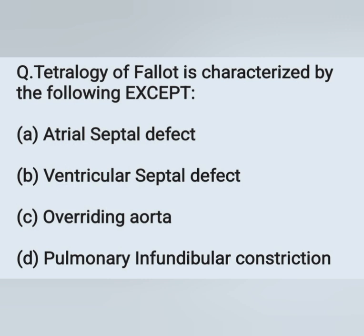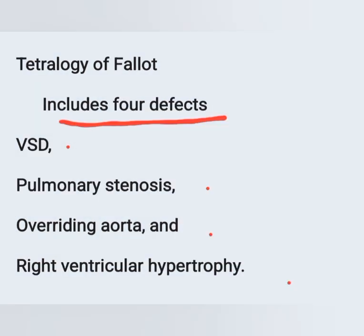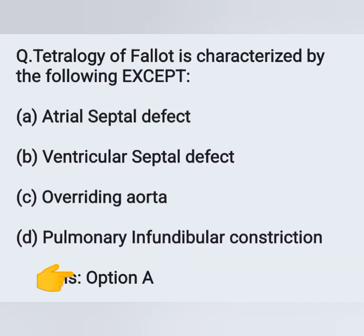Tetralogy of Fallot is characterized by the following, except: Option A: atrial septal defect. Option B: ventricular septal defect. Option C: overriding of aorta. Option D: pulmonary infundibular constriction. Tetralogy of Fallot includes four defects: ventricular septal defect, pulmonary stenosis, overriding of aorta, and right ventricular hypertrophy. Pulmonary infundibular constriction is pulmonary stenosis. So the correct answer is Option A, atrial septal defect, as the remaining options are all features of Tetralogy of Fallot.